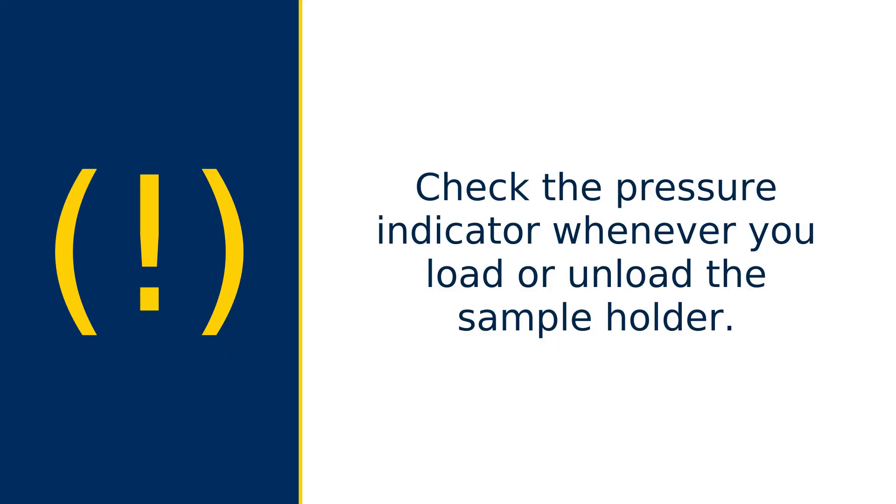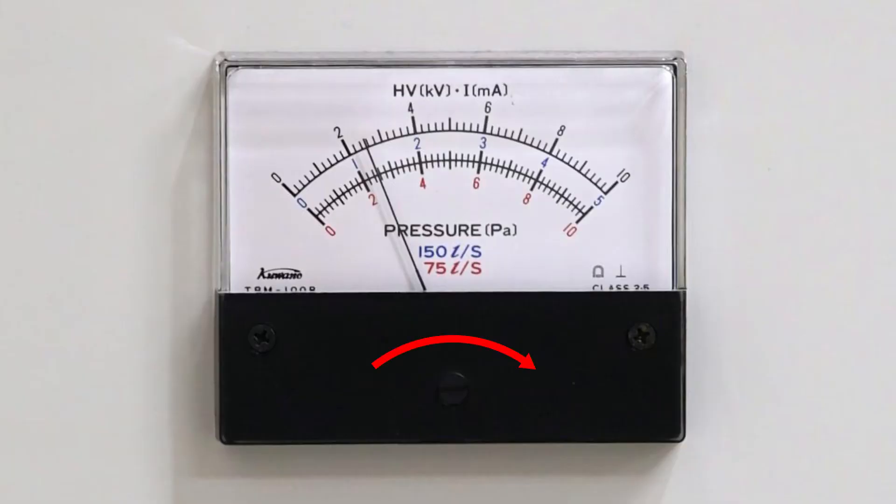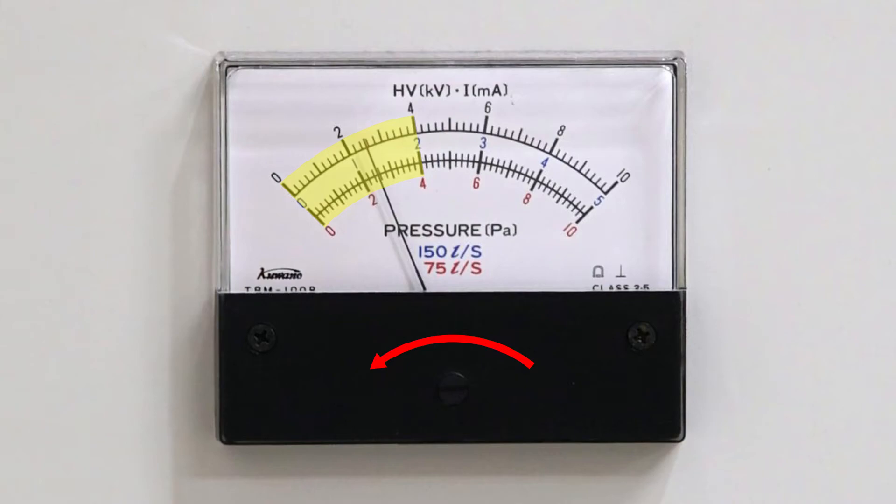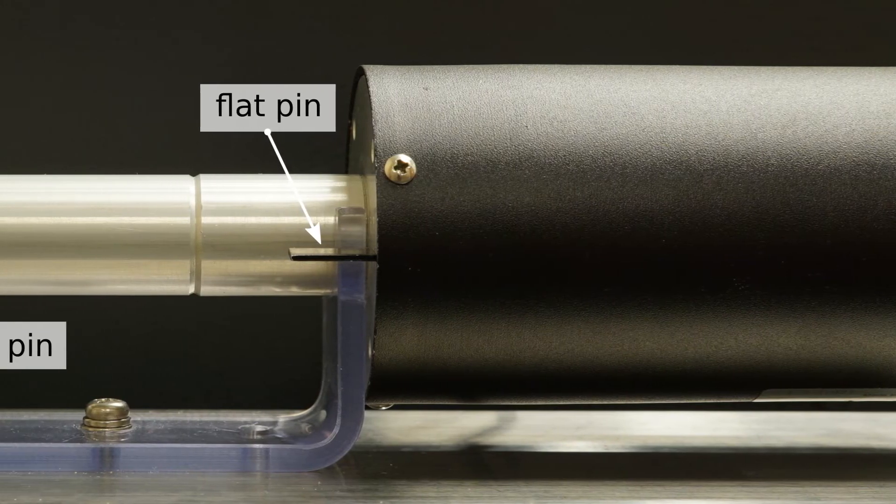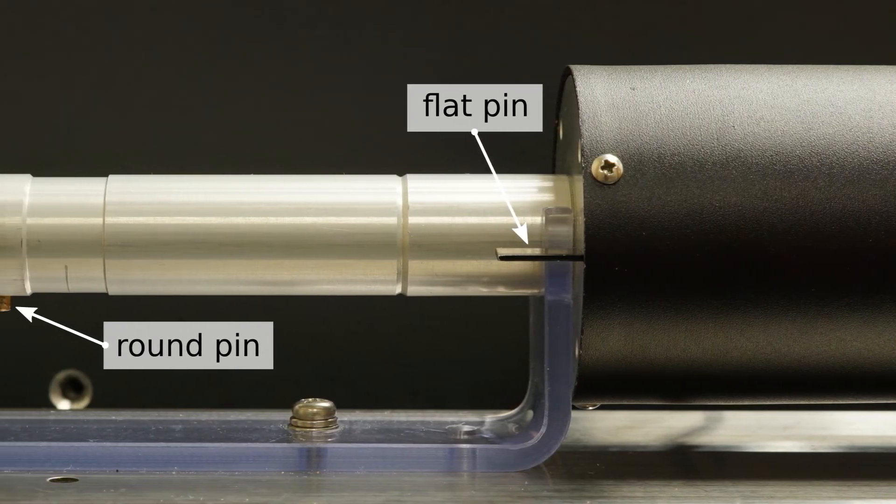Check the pressure indicator whenever you load or unload the sample holder. The indicator should move to the right and return to the left of the blue zone. Before loading the sample holder, take note of the flat pin and the round pin, which help ensure alignment.